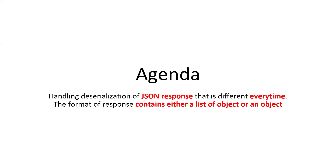Hi everyone. Today's agenda is handling a JSON response that we get from any XYZ API, but it is varying every time. What is varying is one of the properties inside that response, which is coming as an object sometimes and as a list of objects at other times. So how to handle this is what we are going to see in this video.